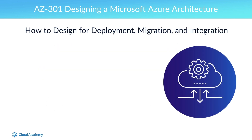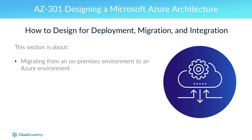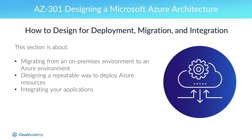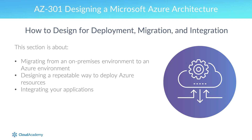The fifth section is one of the smallest. The subject is how to design for deployment, migration, and integration. It's about migrating from an on-premises environment to an Azure environment, designing a repeatable way to deploy Azure resources, and integrating your applications using services such as Azure API Management.